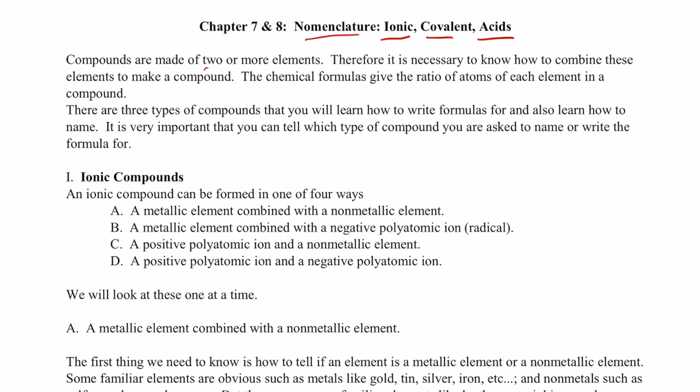Now compounds are made of two or more elements. Therefore, it's necessary to know how to combine these elements to make a compound. The chemical formulas give the ratio of atoms of each element in a compound. There are three types of compounds that you will learn how to write formulas for and also learn how to name.